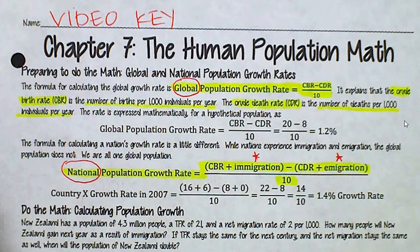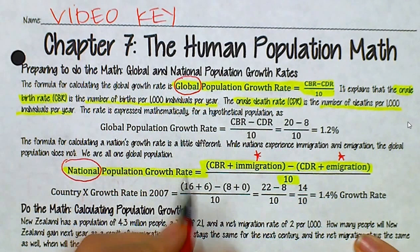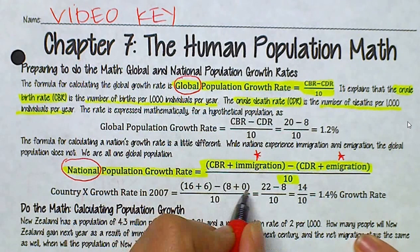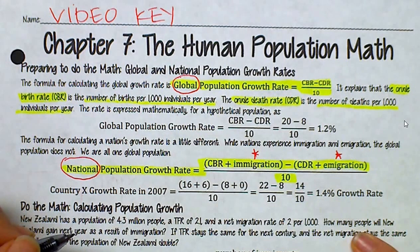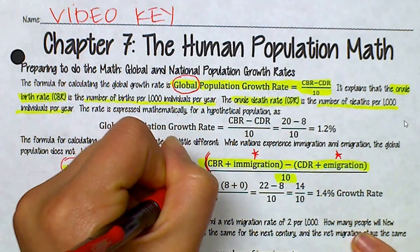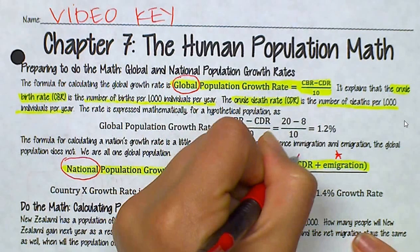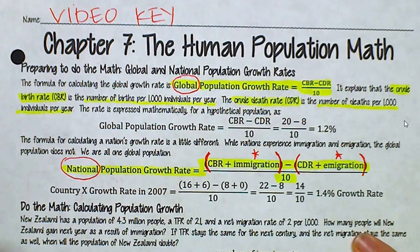For a hypothetical country X in 2007, the growth rate is: CBR of 16 plus immigration of 6, minus CDR of 8 plus emigration of 0, all over 10, which gives about 1.4. Make sure you use parentheses in your calculator and follow the order of operations correctly, or you will get an incorrect answer.